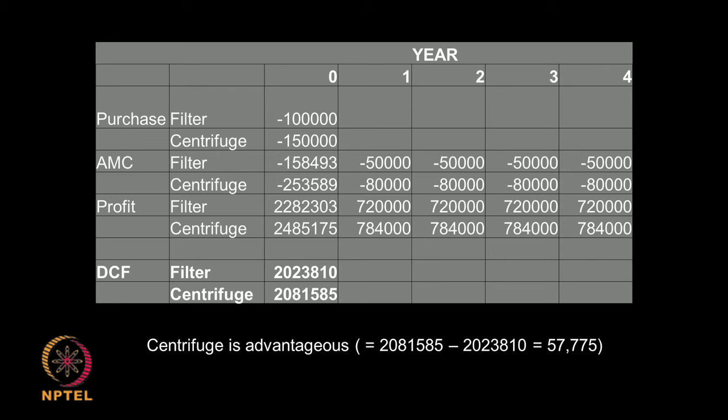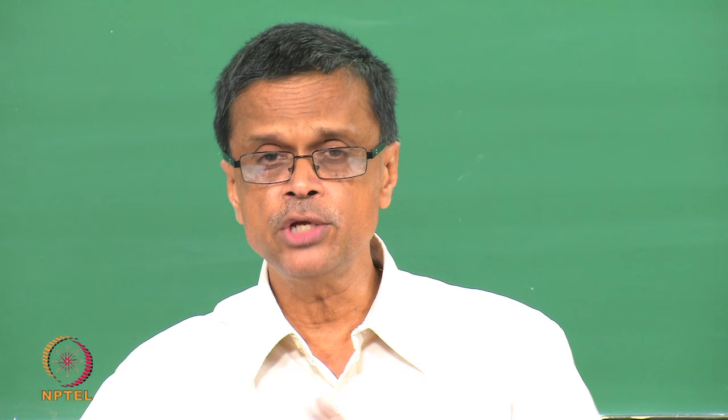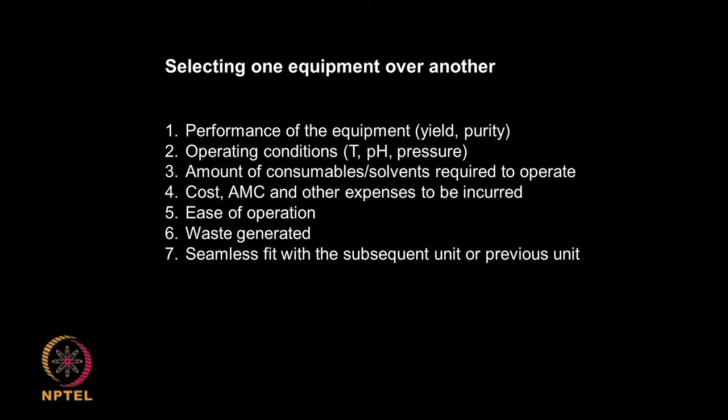This is very useful because many times you make decisions based on yield, purity, operability — but cost plays a very important role. Ultimately it is the cost of the equipment that is going to decide. So you need to understand that cost plays a very important role and decisions can be made based on this cost. When selecting equipment it is not only yield, purity, temperature, pH, pressure, amount of consumables, cost, annual maintenance contract, other expenses, ease of operation, how much waste is generated, but all these we need to consider.